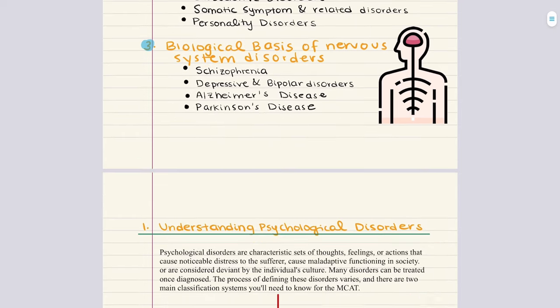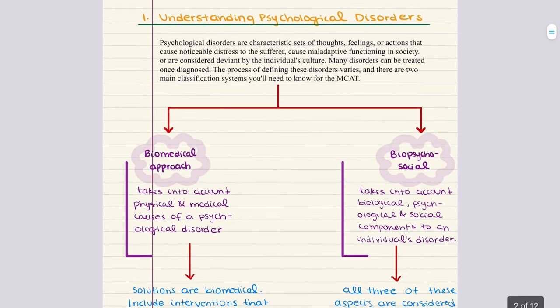With that, we begin with objective one, understanding psychological disorders. Psychological disorders are a set of thoughts, feelings, or actions that cause noticeable distress to the sufferer. They are usually considered deviant by the individual's culture, or they cause maladaptive functioning in society — meaning some aspect of the individual's behavior negatively impacts others or leads to self-defeating outcomes. Many disorders can be treated once properly diagnosed, and there are two main classification systems we need to know for the MCAT.